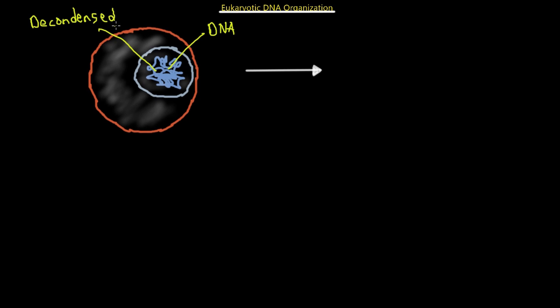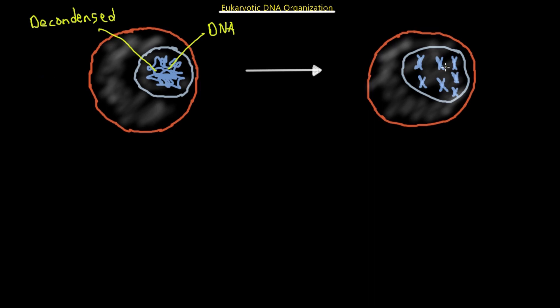However, recall that when the cell is going through mitosis or meiosis, the chromosomes are going to be condensed. They're going to look something like this. And this is why we will be able to see them. So we have multiple chromosomes. And this would be the condensed version that could be seen under the light microscope.